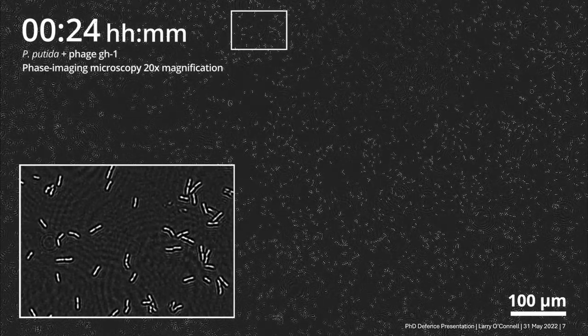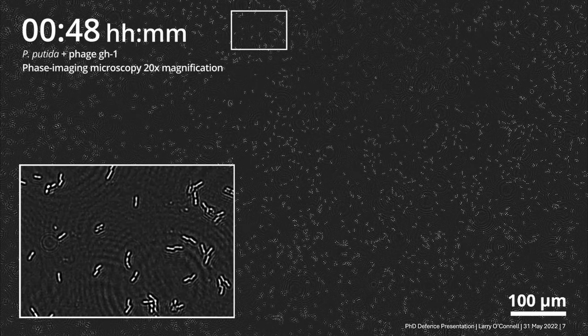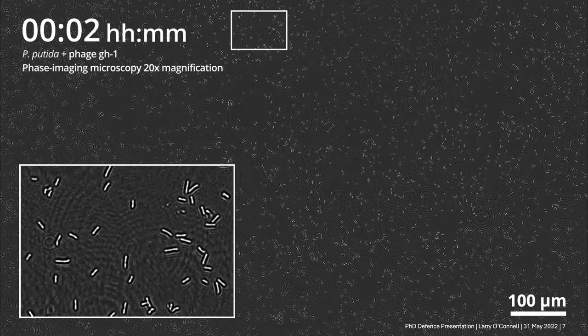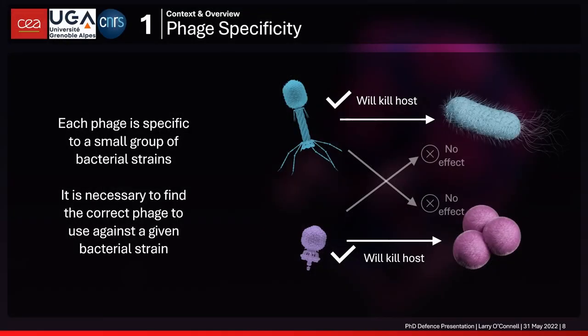What I'd like to emphasize now is the narrow spectrum of action characteristic of bacteriophages. Generally one phage kills one strain or a small group of bacterial strains — they're highly specific. This specificity allows you to target only a specific pathogenic bacterium in the patient's body without disturbing the normal commensal flora, compared to antibiotics which kill almost everything.